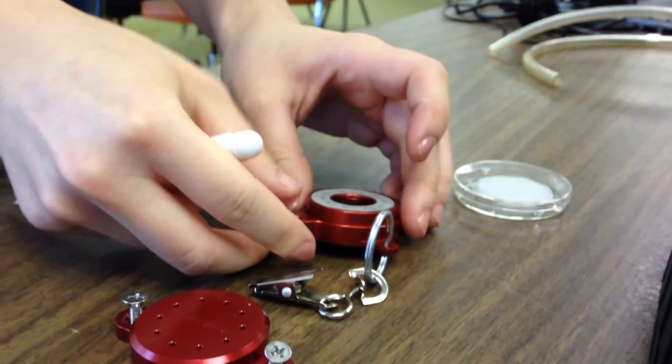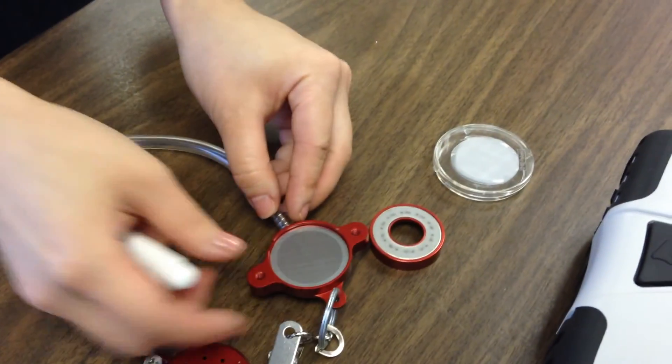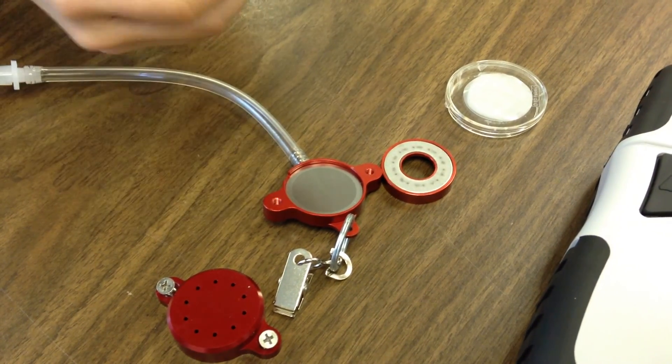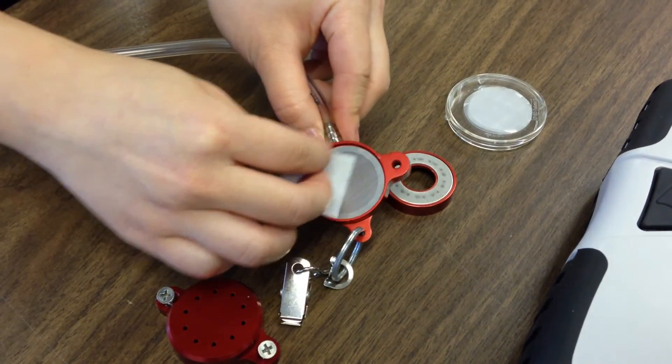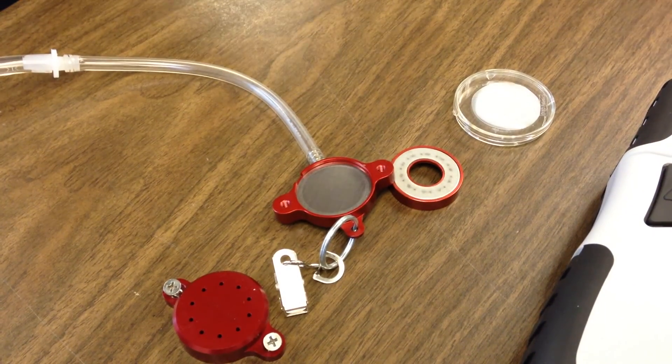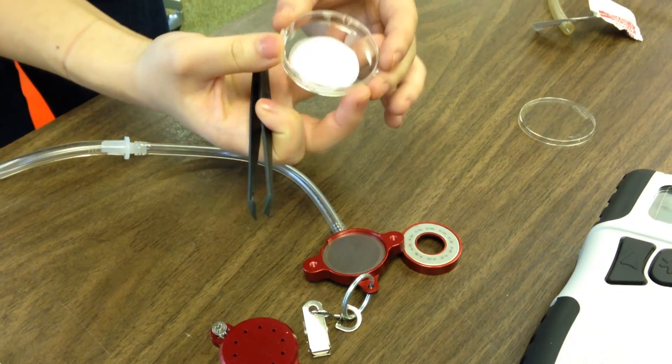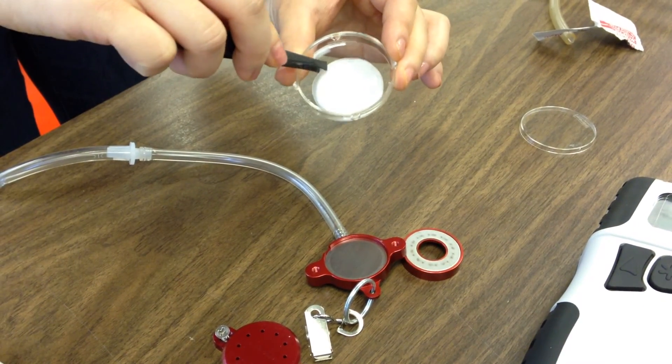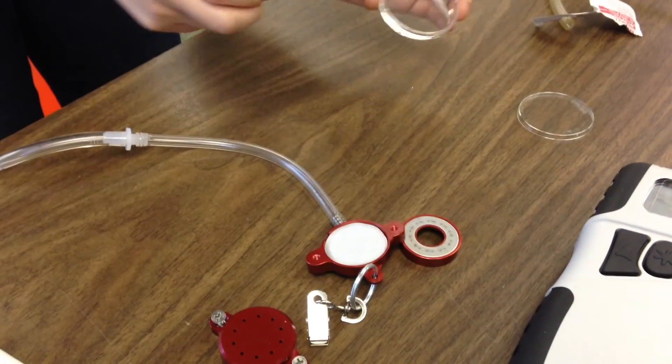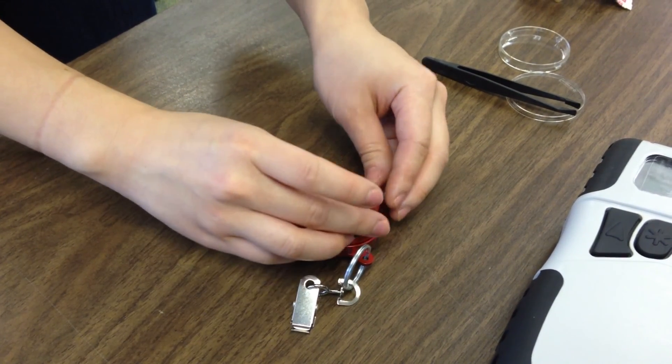Unscrew the cap of the cut point then remove the outer ring. Use an alcohol wipe to clean the stainless steel screen. After letting the screen dry for a few seconds, use tweezers and insert a new Teflon filter. Place the ring back on, then screw the cap back on.